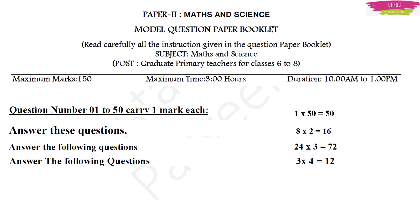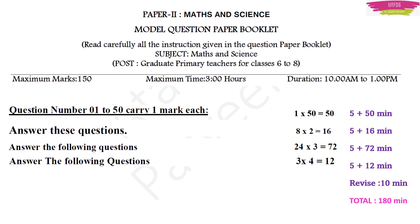Once you get the question paper, first go through it — but go through only the one-mark questions. Take a good 5 minutes to go through these 50 questions. You will get confidence if you know many of the answers. If you don't know many of the answers, don't worry. First attempt the questions which you already know, and then go for a second round.